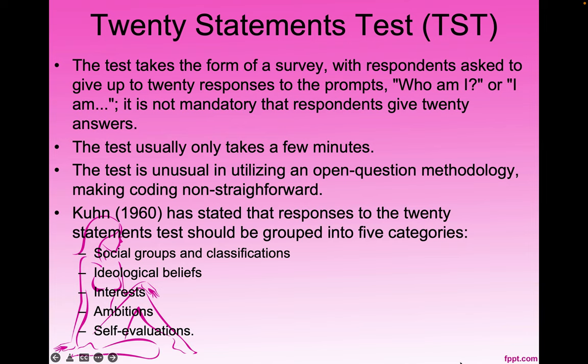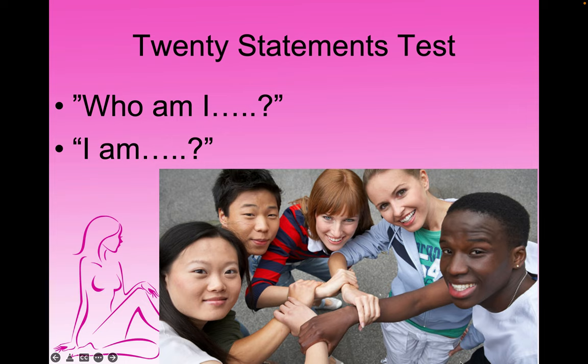Kuhn stated that responses to the 20 Statements Test should be grouped in five categories. Social groups and classifications would be one group. Ideological beliefs would be another group. Interests, another group. Ambitions, another group. In other words, who are you? Who am I? And you're supposed to finish those statements.